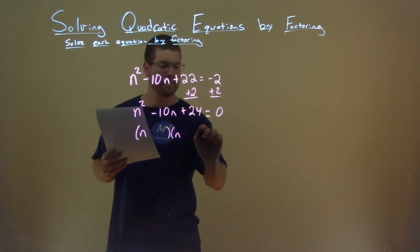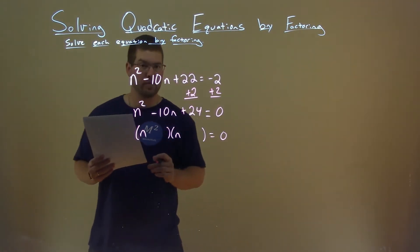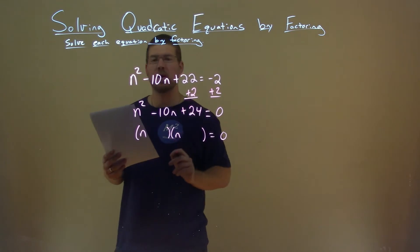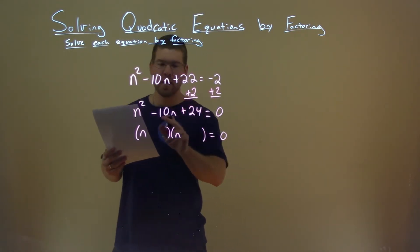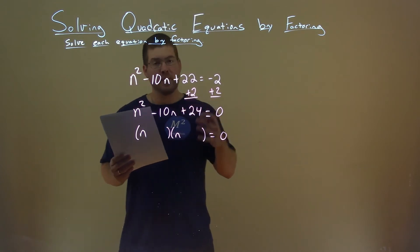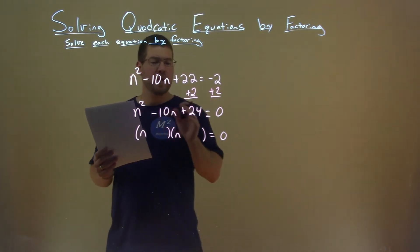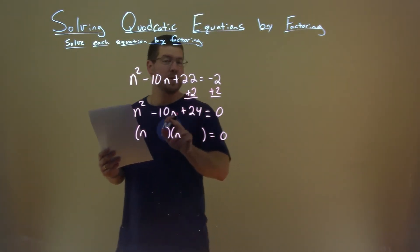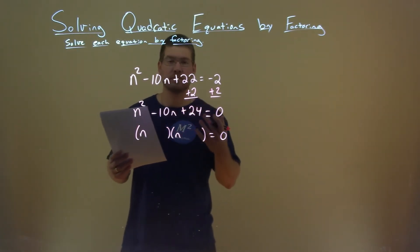Let's set this up and we ask ourselves this question, what two numbers multiply to be 24, positive 24, but added to be a negative 10? Well, this tells me both numbers will be negative. So two negative numbers that multiply to be 24, but added to be a negative 10, I'm thinking 6 and 4.